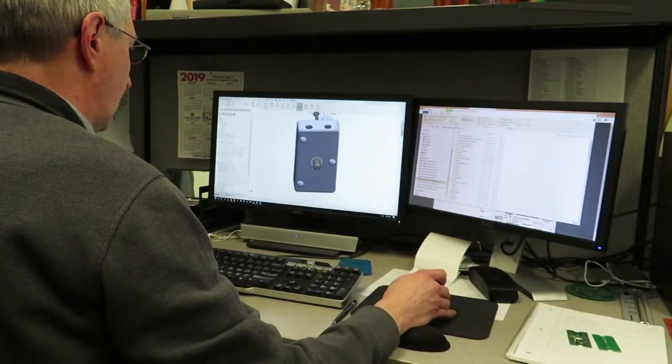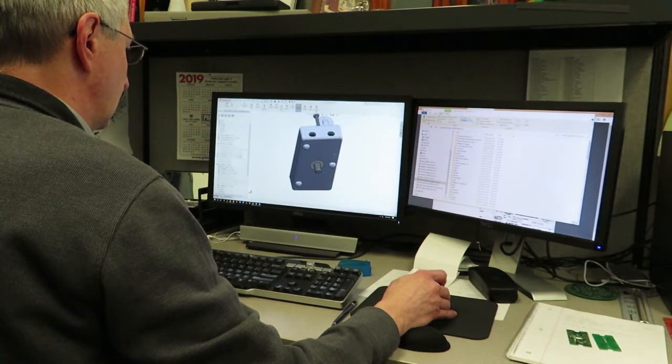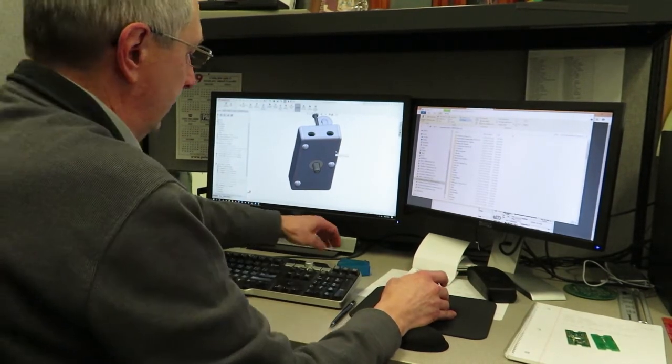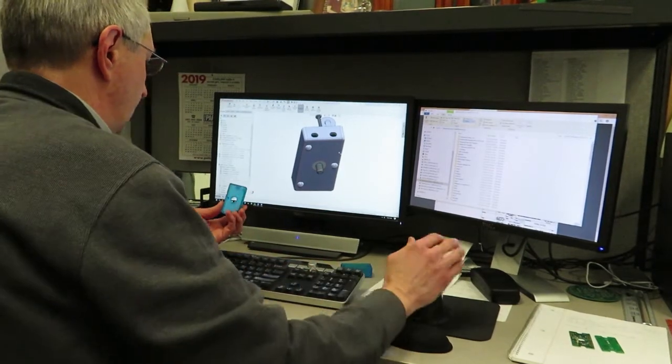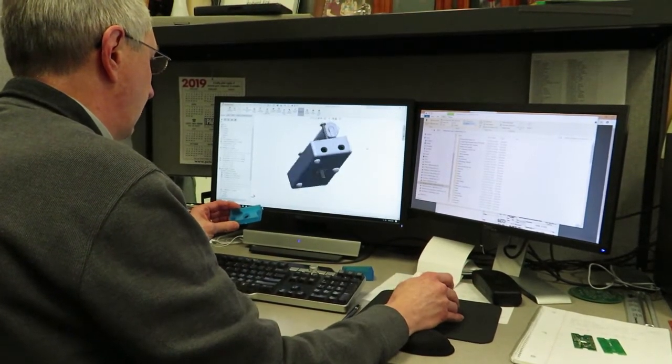A second application is 3D printing prototype enclosures for our printed circuit board assemblies. When we design circuit board assemblies for our customers, they often have unique space constraints, which means we also need to design custom enclosures.